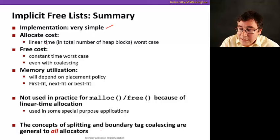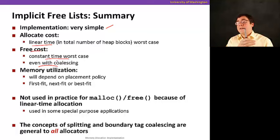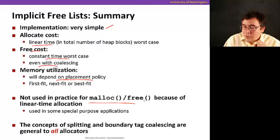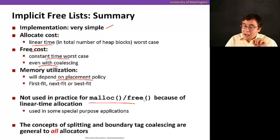So here's a summary of implicit free lists. The implementation is very simple. The allocate cost is linear time on the total number of heap blocks, including allocated and free. The free cost is constant time. In the worst case, even with coalescing, because then we know how to point both forwards and backwards, so we never have to scan the heap. And so the memory utilization that we get is going to depend on the placement policy, whether it's first fit or best fit or next fit. And so this is not used in practice for malloc and free because of this linear time allocation. That's still not good. We can do a lot better. We're going to see that. But it is used in some special purpose applications. So everybody, keep in mind that the concept of splitting and boundary tags are general to all allocators. So we're going to use this concept of splitting free blocks, so you don't waste the part that was still free in your block in case you use a block that's larger than what you need. And we're going to use things like boundary tag to make coalescing fast. See you soon.